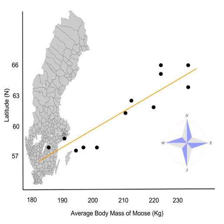An additional complication in assessing Rapoport's rule for data based on field sampling is the possibility of a spurious pattern driven by a sample size artifact. Equal sampling effort at species-rich and species-poor localities tends to underestimate range size at the richer localities relative to the poorer, when in fact range sizes might not differ among localities.